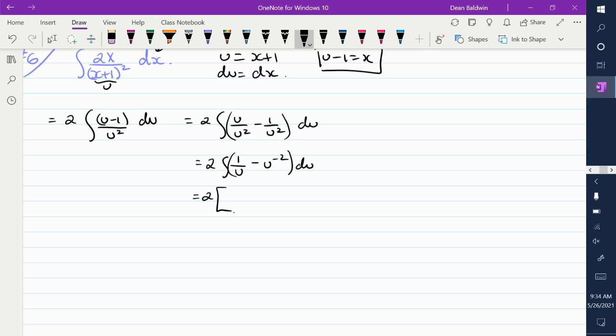So 2 sits on the outside. What's the anti-derivative of 1 over u? That's the log of u minus... What do we do with this u to the negative 2 thing? So you add 1 to the exponent. So you get u to the minus 1. You divide by that new exponent, which is negative 1.